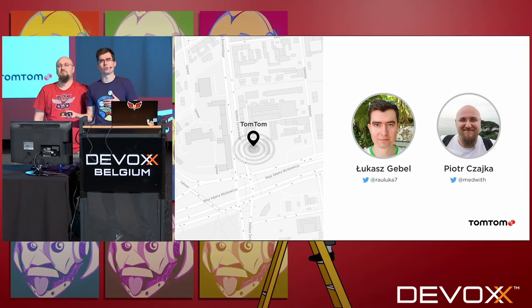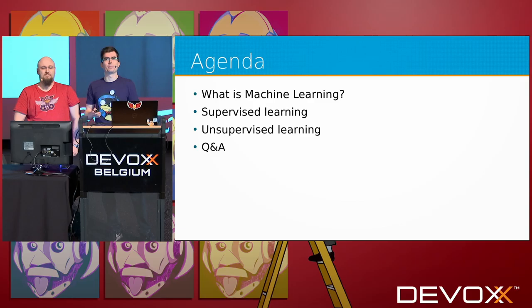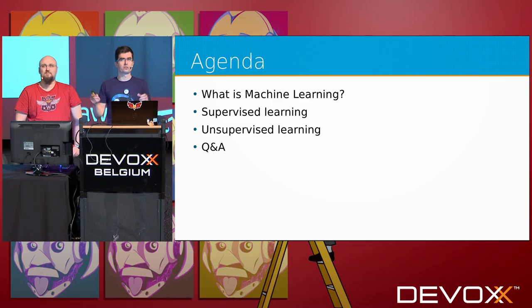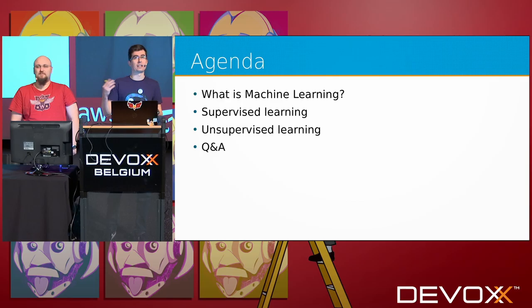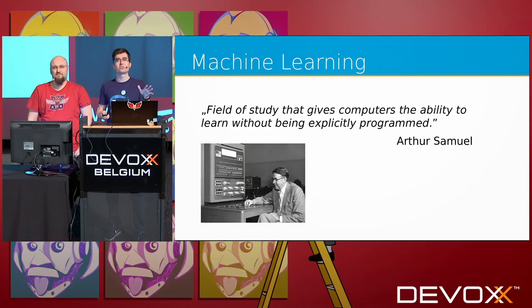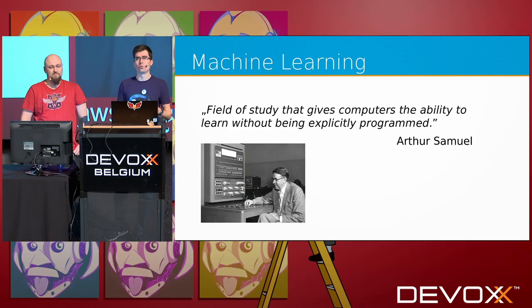We build services like matrix routing and geofencing — services that help people build location and navigation oriented applications. But today we'll talk about machine learning. First, we'd like to define what machine learning is, then go through two main types: supervised learning and unsupervised learning, and of course answer your questions at the end.